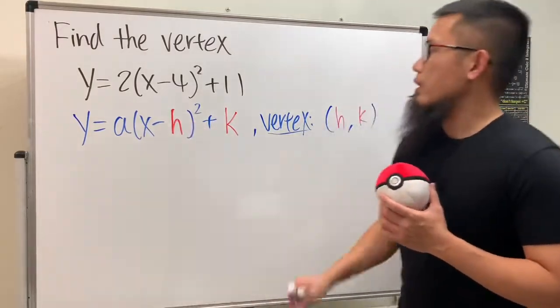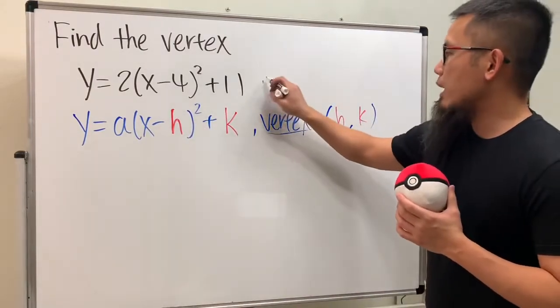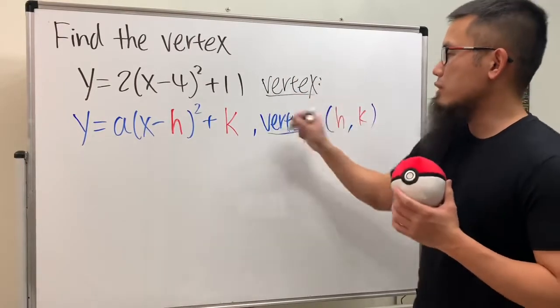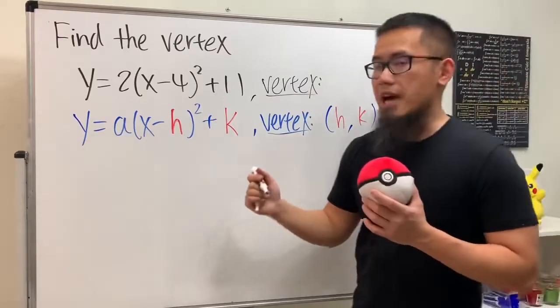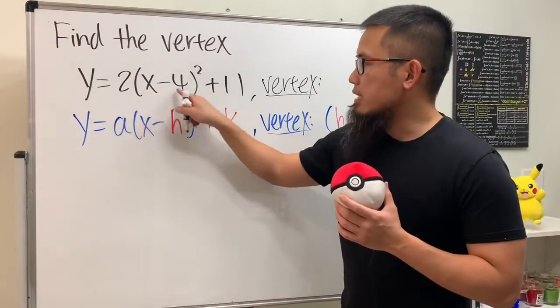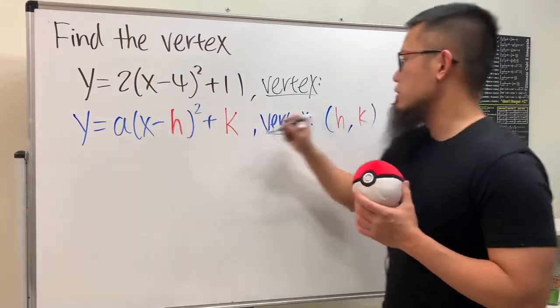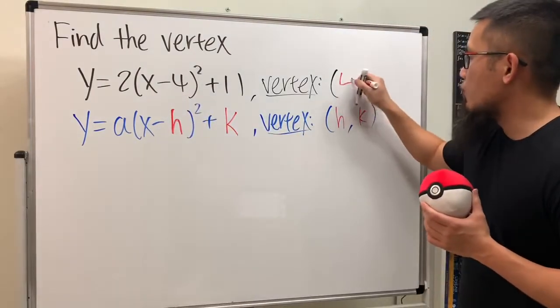So have a look, this is our equation and we are going to find the vertex. We don't have to do too much work but I just have to make sure that you don't mess up the sign. You see we have x minus four, the truth is h is just equal to four so the vertex is actually at four.